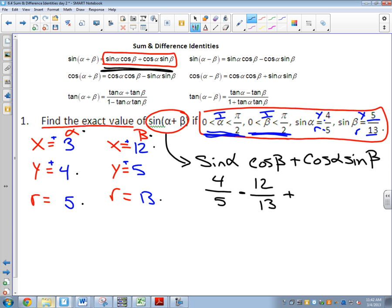Plus cosine of alpha, so alpha triangle, x over r, three-fifths, times sine of beta. So I go to my beta triangle, y over r, so I'm doing sine, five-thirteenths.